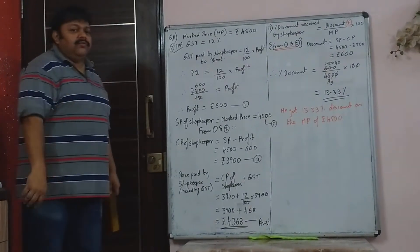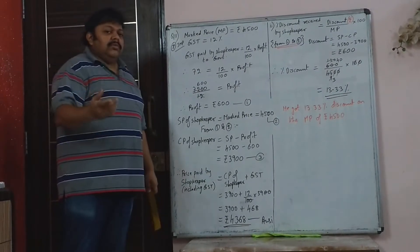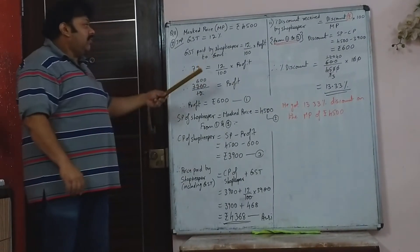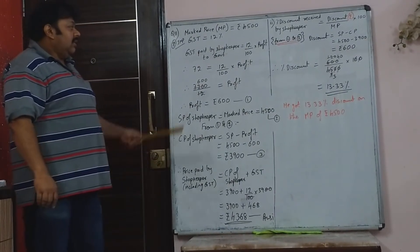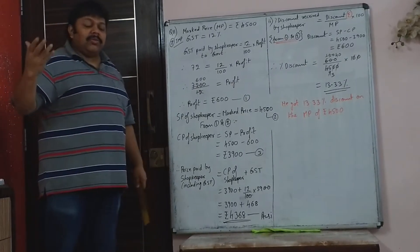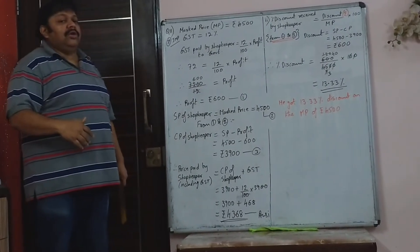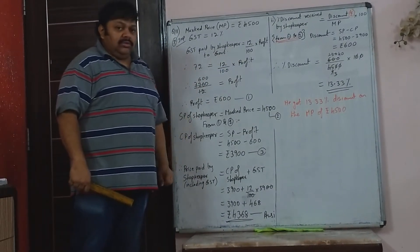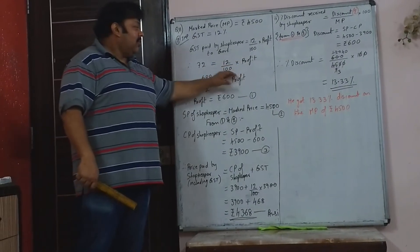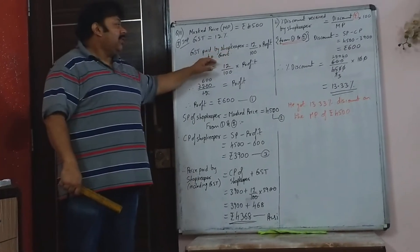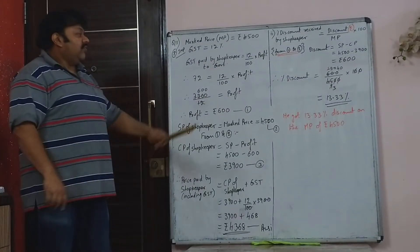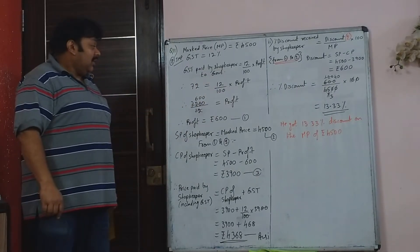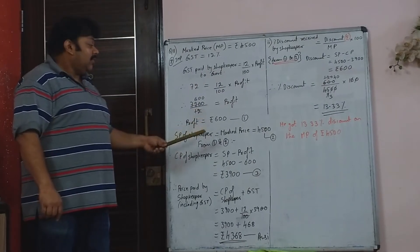The 11th sum is slightly different. In this sum, they tell you how much GST was paid by the shopkeeper to the government — it is given that GST paid by the shopkeeper to the government is Rs. 72. GST is paid on the profit, so 12% of the profit equals Rs. 72. From that, you can find the profit made by the shopkeeper: Rs. 600.